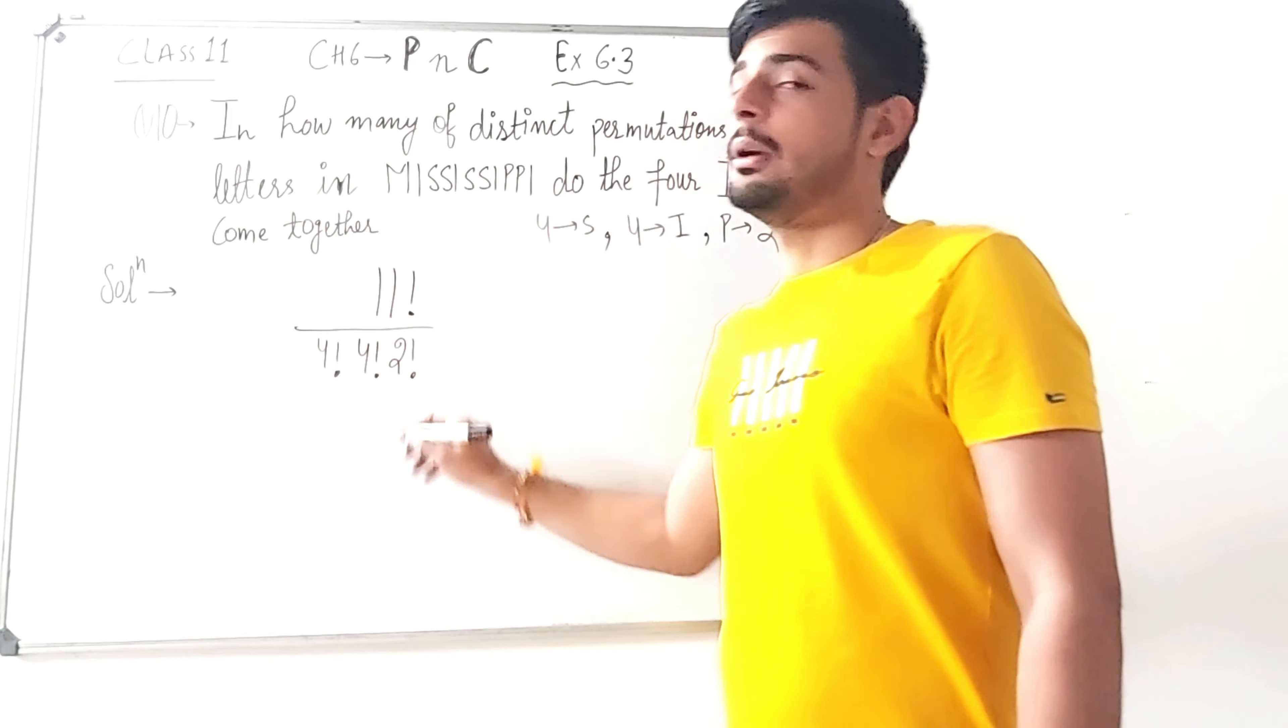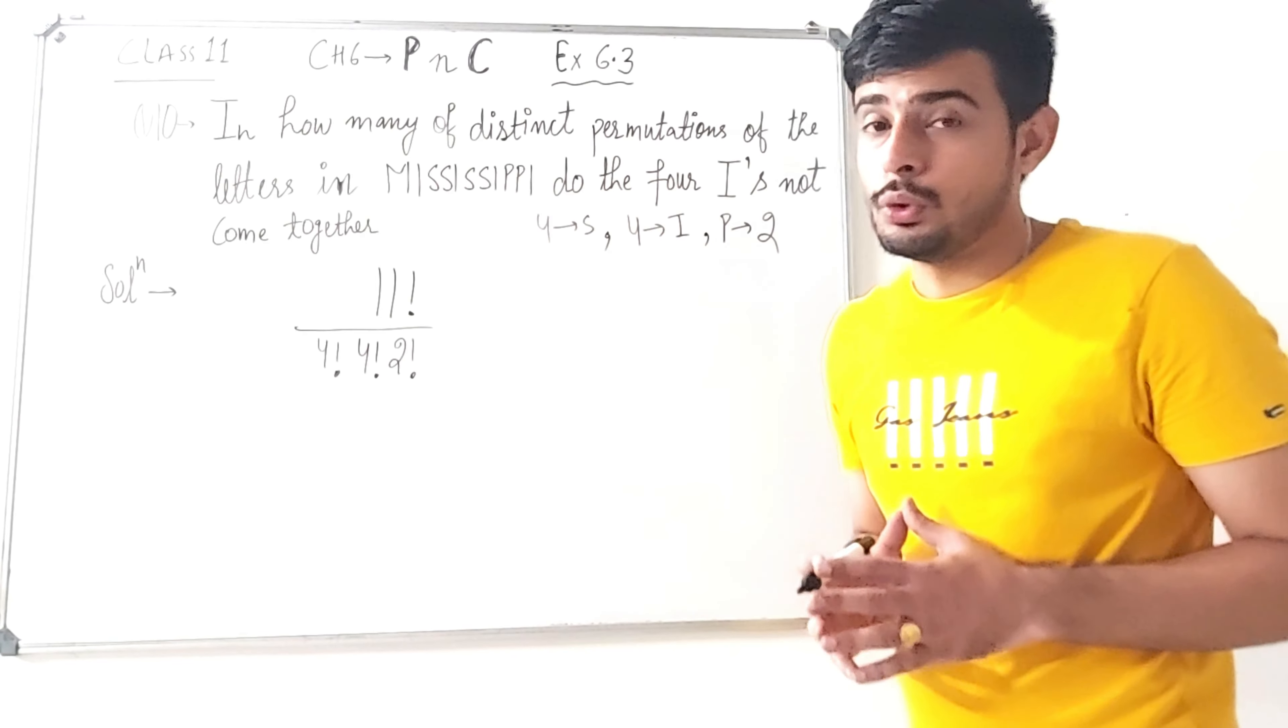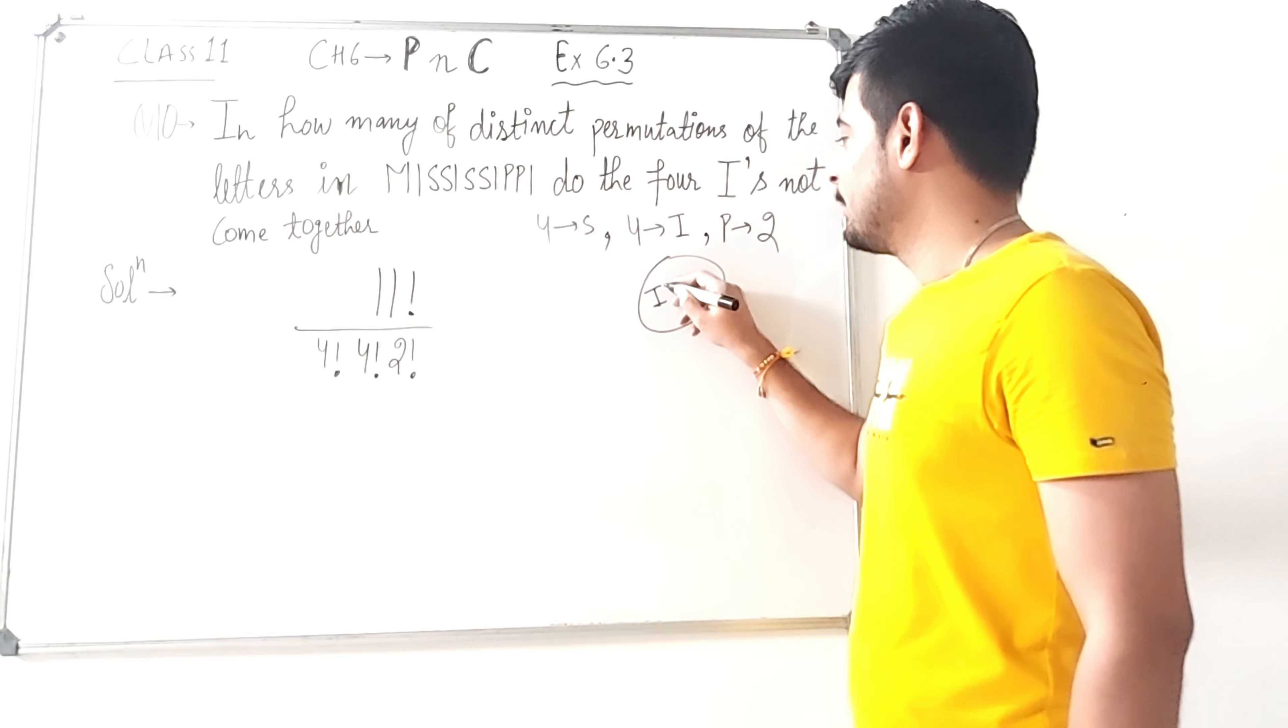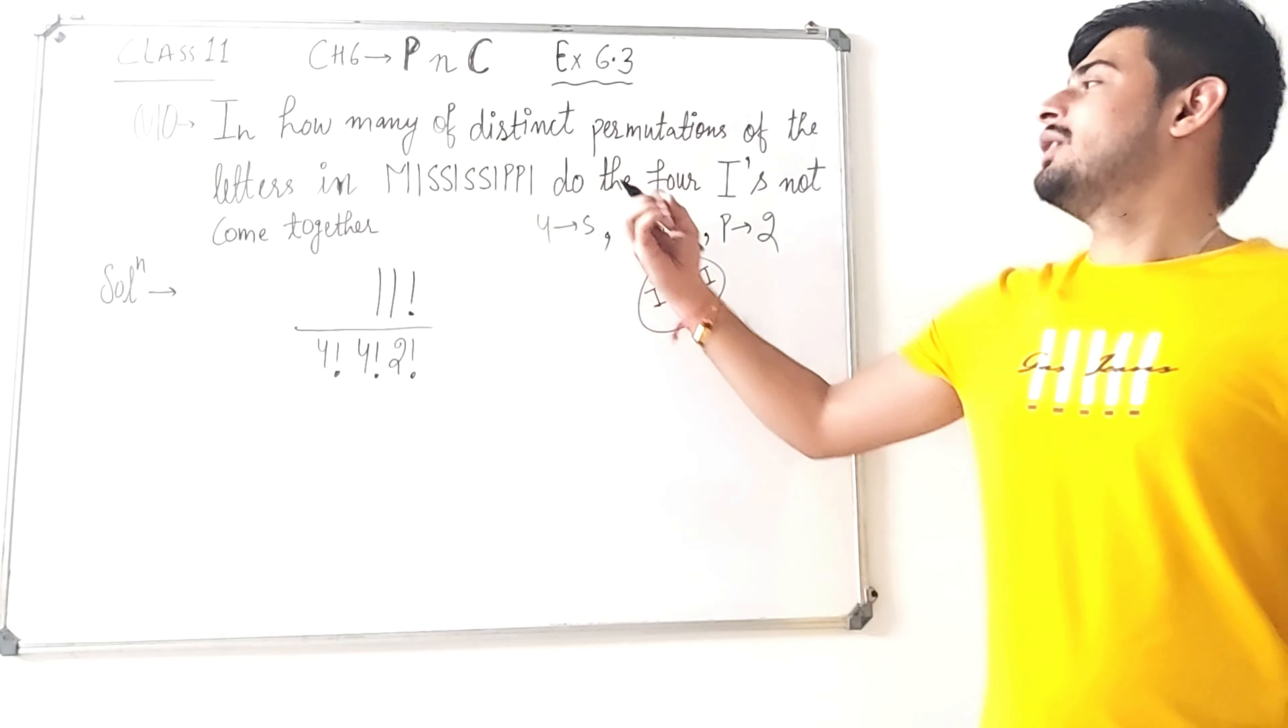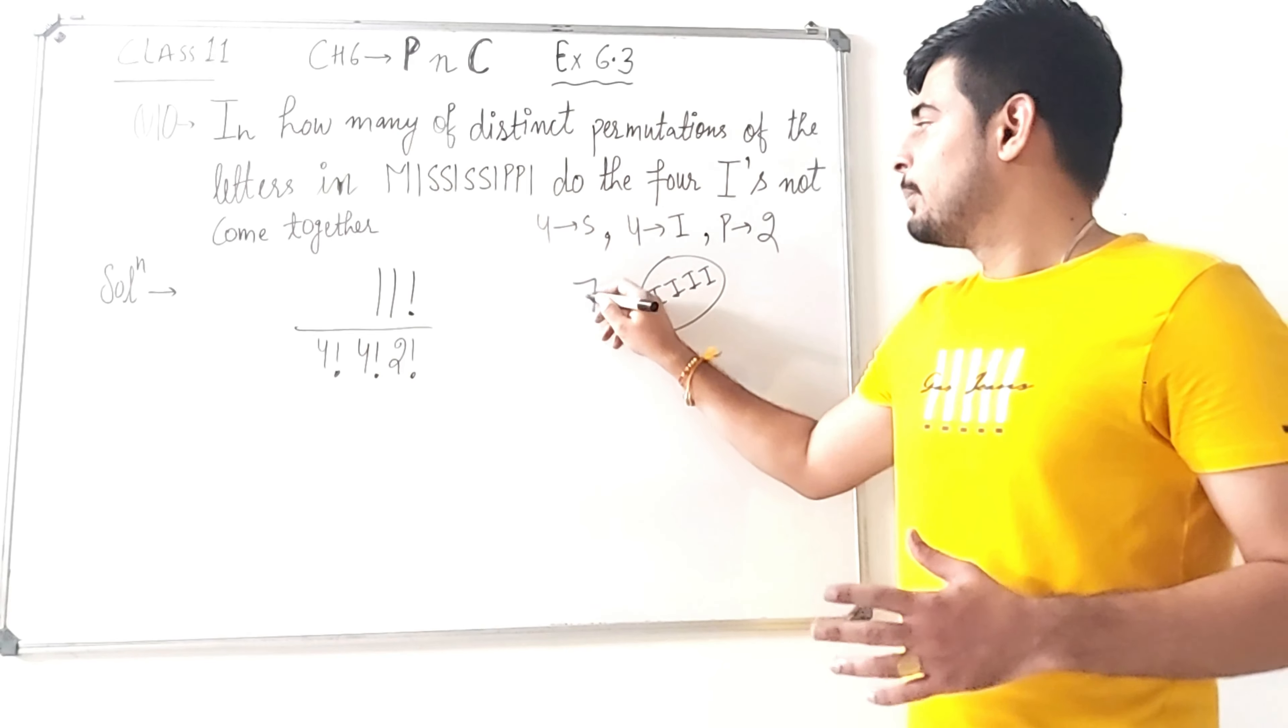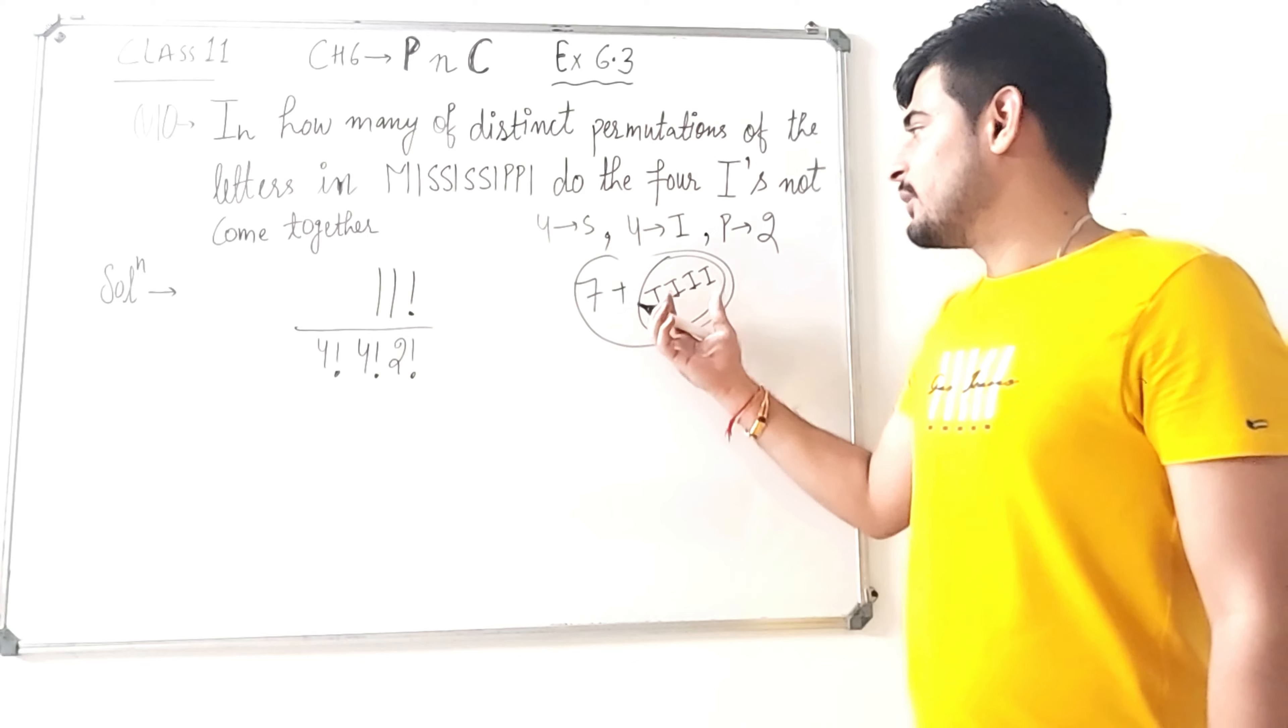Now I have to minus here. I have to get 4 I's together. When I take 4 I's and put them in one bag, there are total 11 letters, so I have remaining 7 letters. 7 letters plus this I bag, 7 plus 1, how much is it?